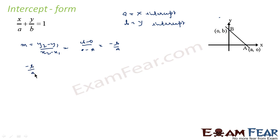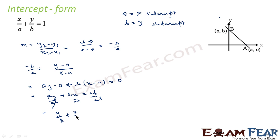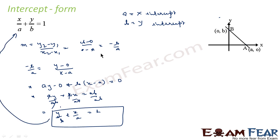So we write: -b/a = (y - 0)/(x - a). Solving, we get: ay + b(x - a) = 0, which gives ay + bx = ab. Dividing the whole equation by ab to get the right-hand side equal to 1, we get x/a + y/b = 1. This is the same equation, so we have proved it.